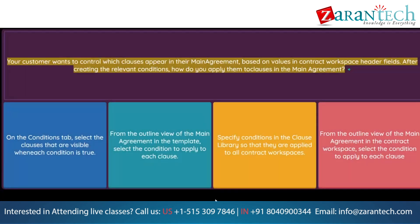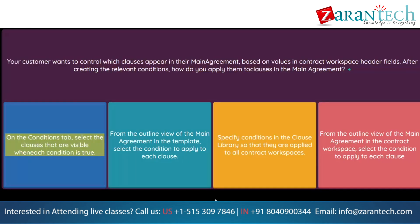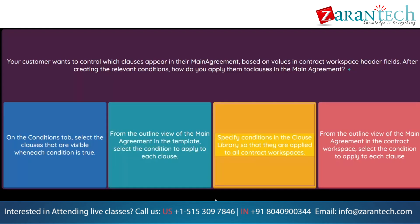Question: Your customer wants to control which clauses appear in their main agreement, based on values in contract workspace header fields. After creating the relevant conditions, how do you apply them to clauses in the main agreement? Option 1: On the conditions tab, select the clauses that are visible when each condition is true. Option 2: From the outline view of the main agreement in the template, select the condition to apply to each clause. Option 3: Specify conditions in the clause library so that they are applied to all contract workspaces. Option 4: From the outline view of the main agreement in the contract workspace, select the condition to apply to each clause.